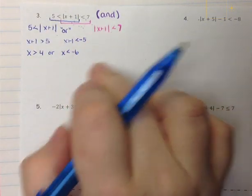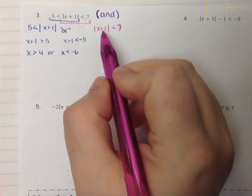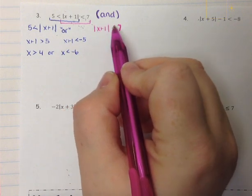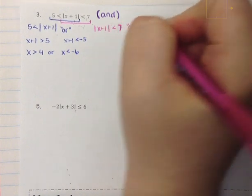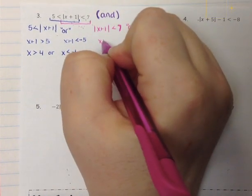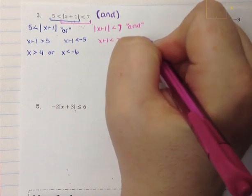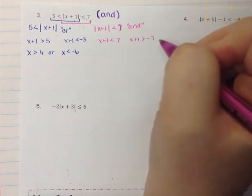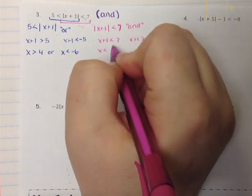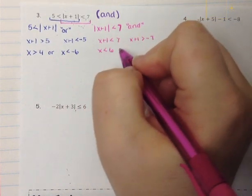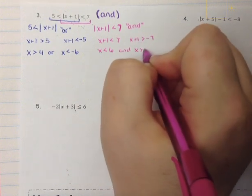That's the blue. We want to finish all the way before going to the number line. In pink, the absolute value is isolated and it's less than 7, so this is an and problem. So we'll have x plus 1 is less than 7, and x plus 1 is greater than negative 7.